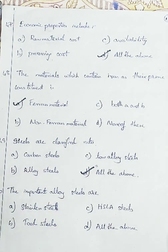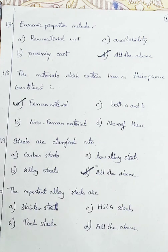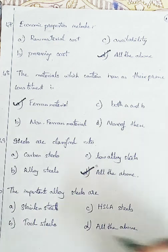Question 50: the most important alloy steels are — stainless steels, tool steels, HSLA steels, and Option D: all the above. Stainless steel, tool steel, and HSLA steels are all definitely important alloy steels. So we are going with Option D, all the above.